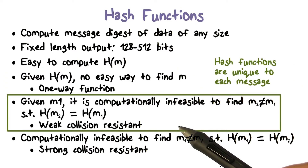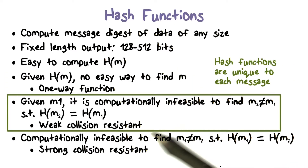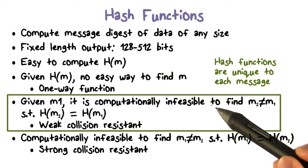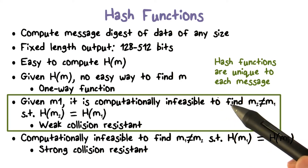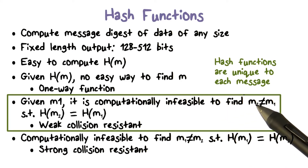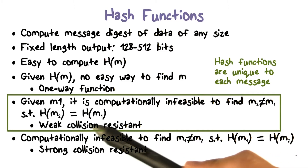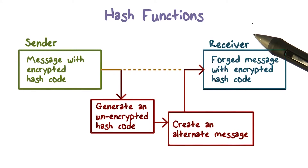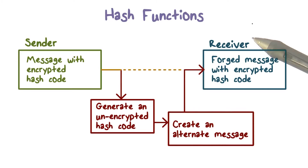The weak collision resistant property says that for a given message, it is not possible to find a different message such that it will have the same hash value as the given message. This is a very important property to ensure message integrity. Now let's take a closer look at this weak collision resistant property.